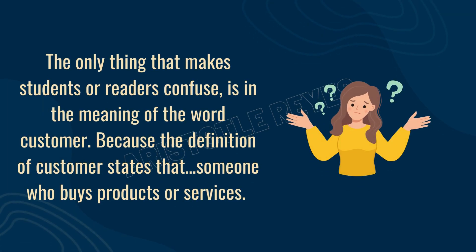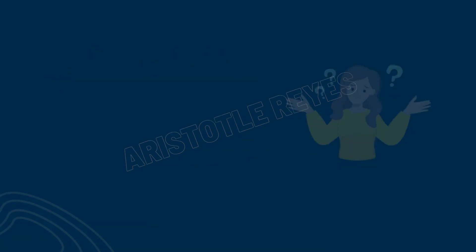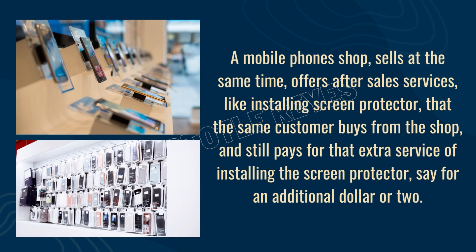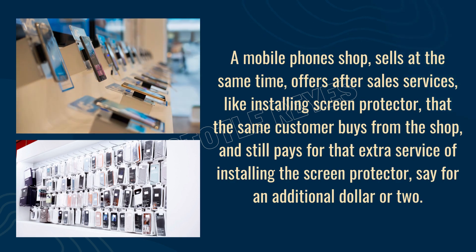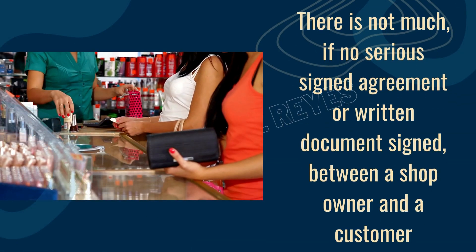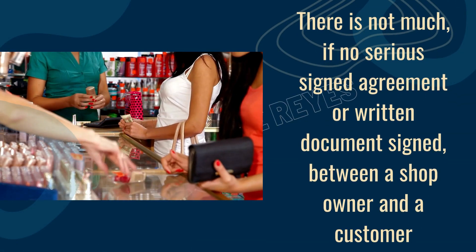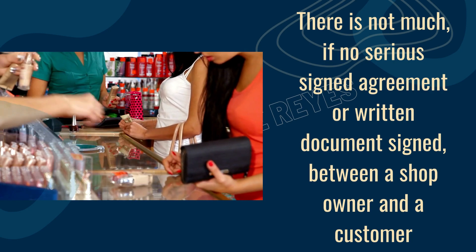The only thing that makes students or readers confused is in the meaning of the word customer, because the definition of customer states that someone who buys products or services. That is true in the case of a mobile phone shop. A mobile phone shop sells and at the same time offers after-sales services like installing a screen protector — that the same customer buys from the shop and still pays for that extra service, say for an additional dollar or two. There is not much, if any, serious signed agreement or written document between a shop owner and a customer.